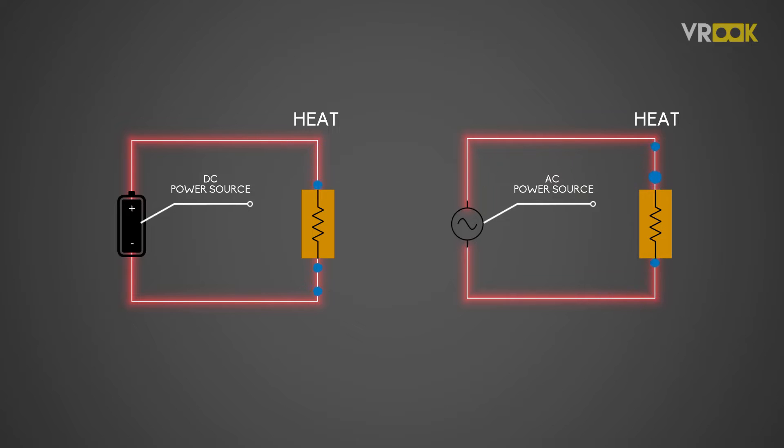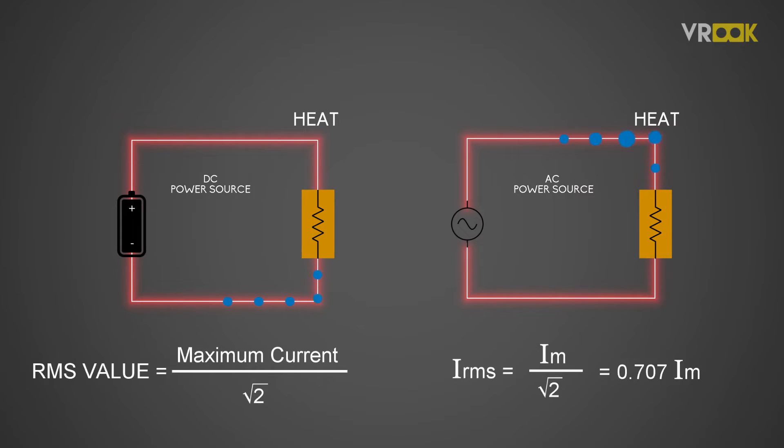When we measure the AC current value which is equivalent to DC current for the same heating effect, it would be maximum current passing through the wire divided by root 2. This IM by root 2 is the effective or RMS value of current. Therefore, the expression for RMS value will be 0.707 multiplied by maximum value of current. 0.707 is the value of 1 by root 2.